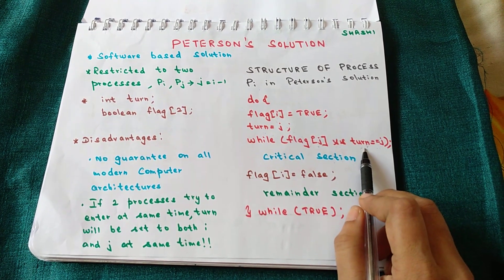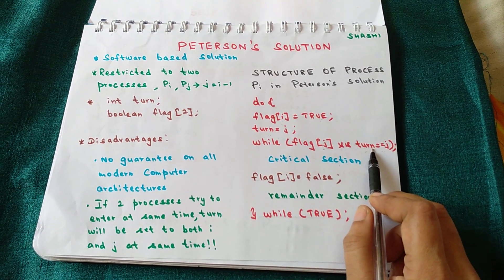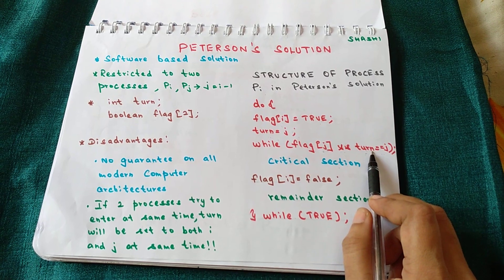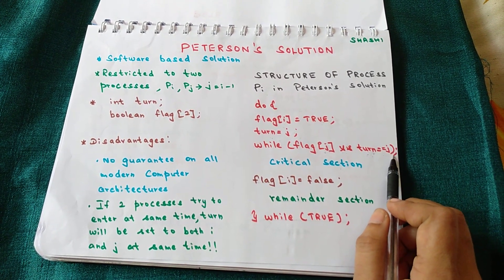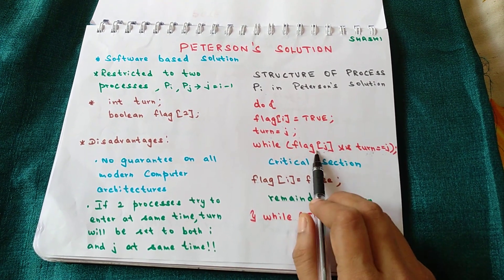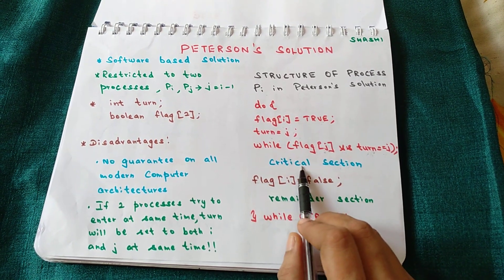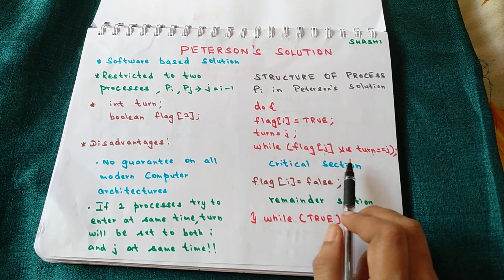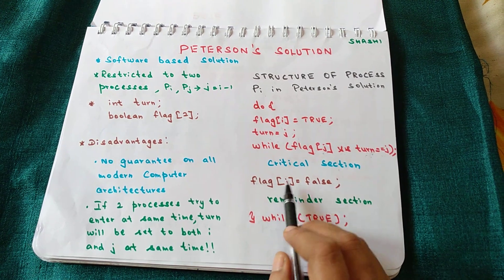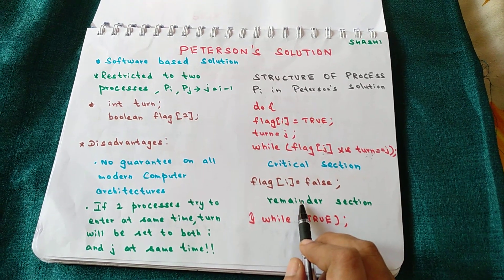When both conditions of the while loop are true, it means that process Pj also wants to enter the critical section or is already in it. So Pi will not be allowed to enter. When Pj finishes executing in the critical section, it sets `flag[j]` to false, making one condition false, and Pi is then able to enter the critical section. After executing in the critical section, Pi sets its own flag variable to false.